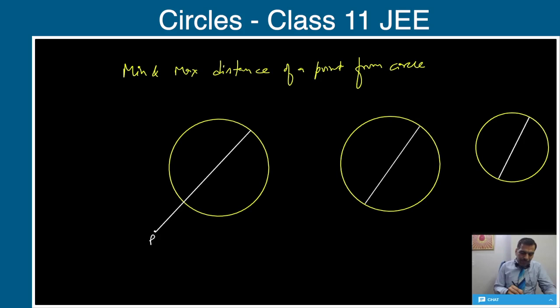Let's say the first case where the point x1, y1 is lying outside, the second case where this point x1, y1 is lying inside, and the third case when the point is lying on the circle. If a point is given and you have to find its minimum and maximum distance from the circle, we'll simply draw a diameter passing through that given point P.